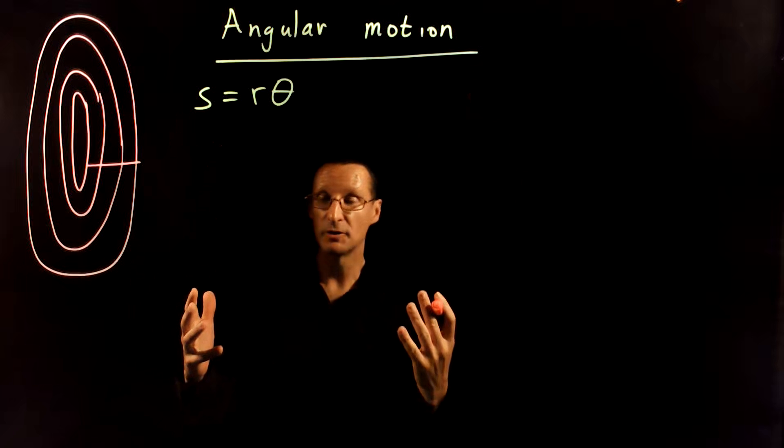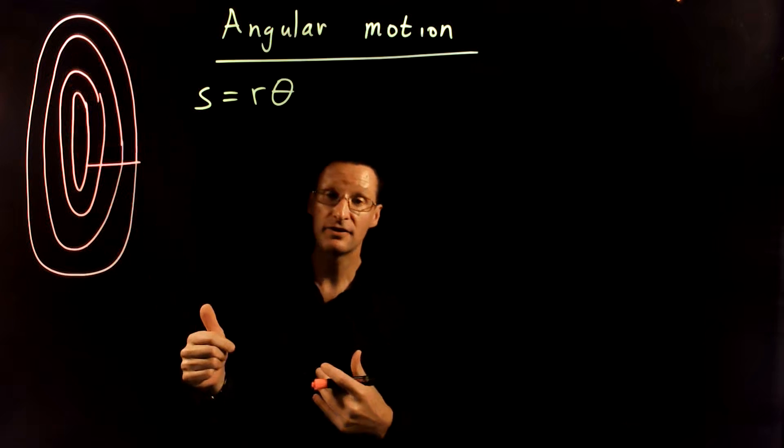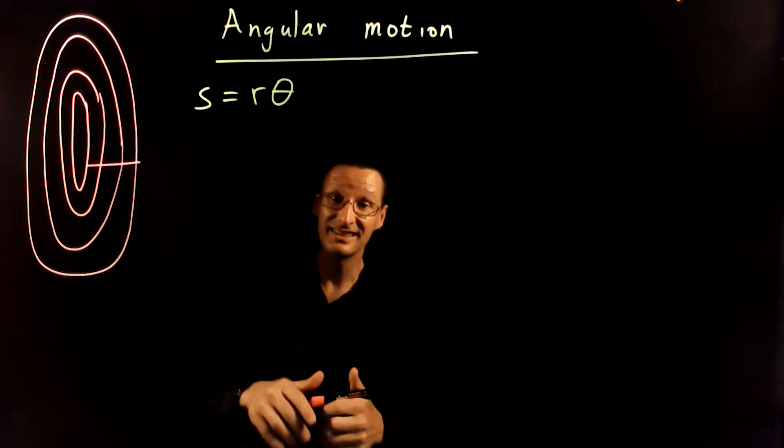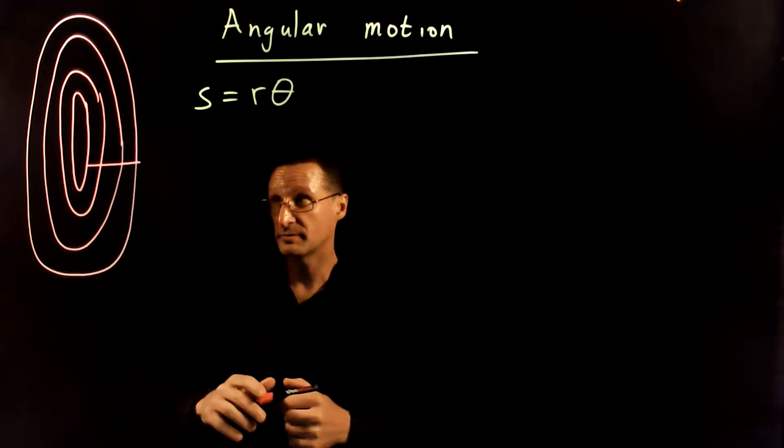The last time when we talked about angular motion, I had left you hanging on this question of the track and field runners and whether it would be an advantage to run on the inside of the track rather than the outside of the track with all things being equal.